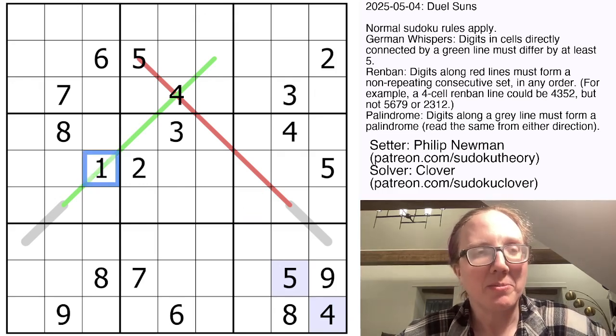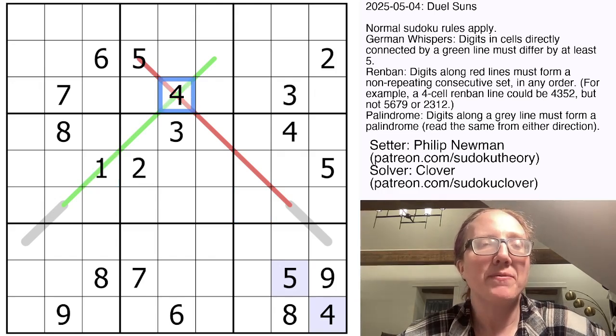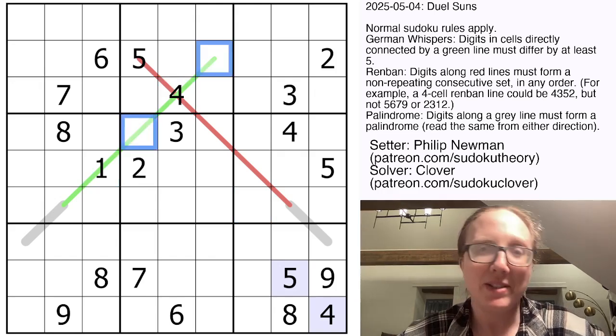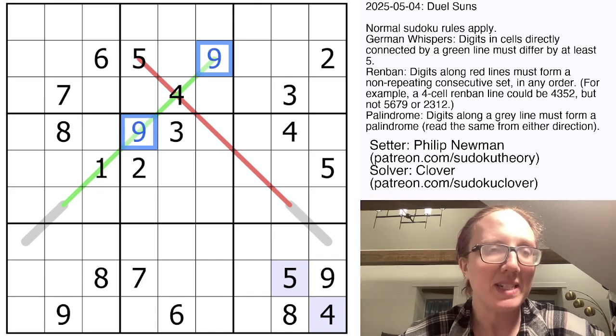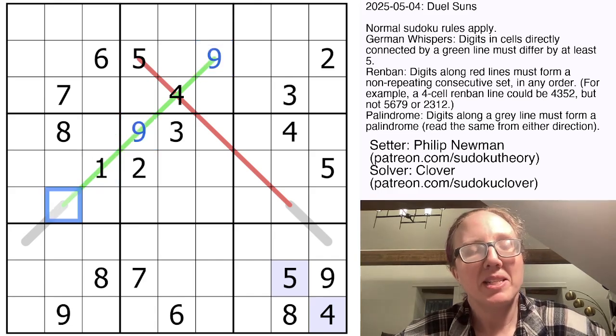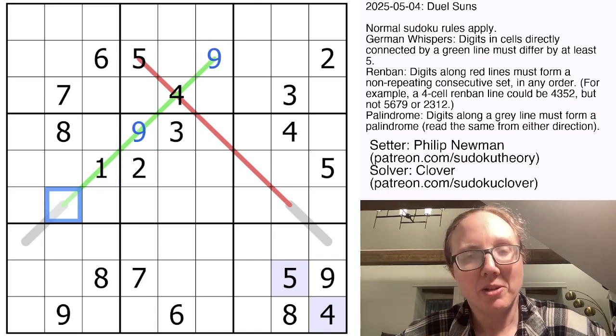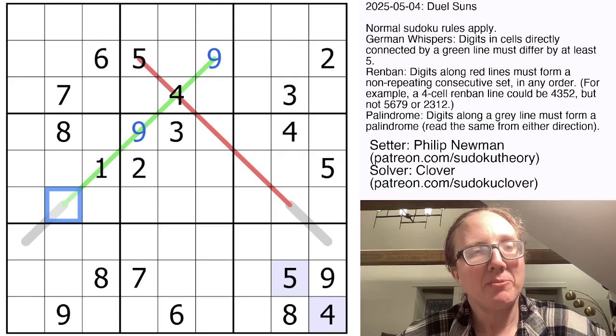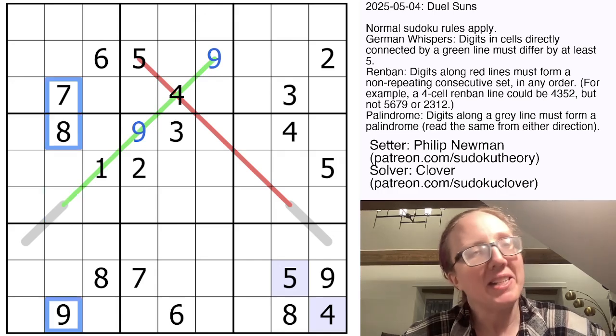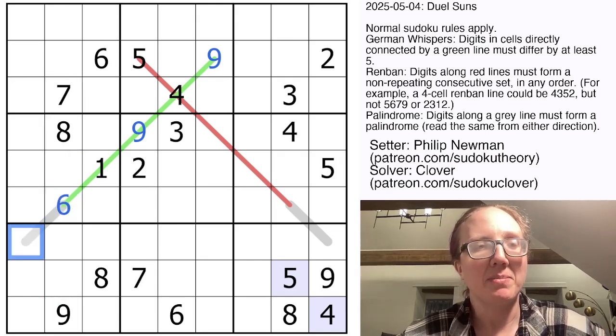So we're going to start with the German whisper line, because the only number that is far enough away from four to have a difference of five or more in Sudoku is nine. Now digits that are at least five away from one in Sudoku are six, seven, eight, or nine, but we already have a six, a seven, an eight, and a nine in the columns. That has to be a six.